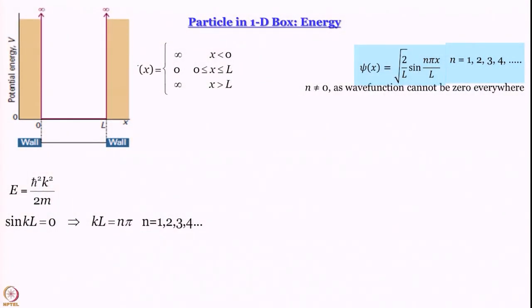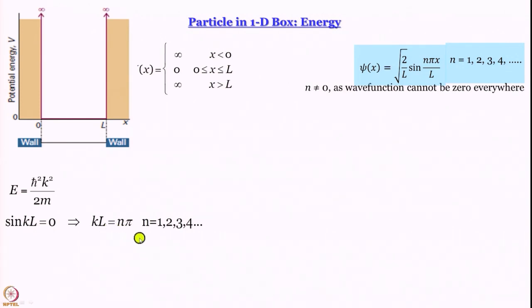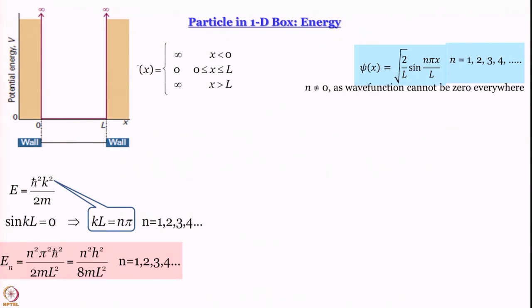The expression for energy for a free particle is E equal to h-cross squared k squared by 2m, and this is the energy our particle would have as long as it is inside the box. Since psi must vanish at x equal to L, we have k times L equal to n pi, where n is a positive integer. The obvious next step is to plug this k L equal to n pi into the free particle energy expression. The moment we do that, the energy expression becomes E of n equal to n squared h squared by 8 m L squared, where n is a positive integer.